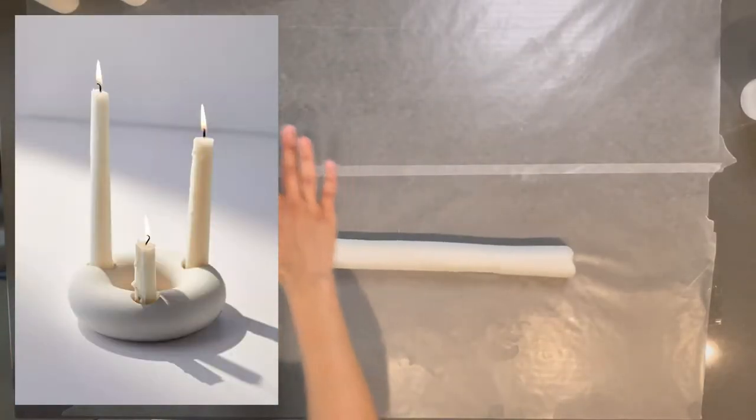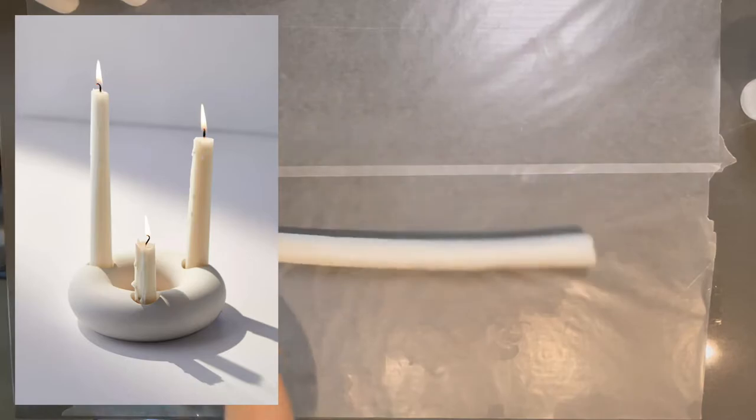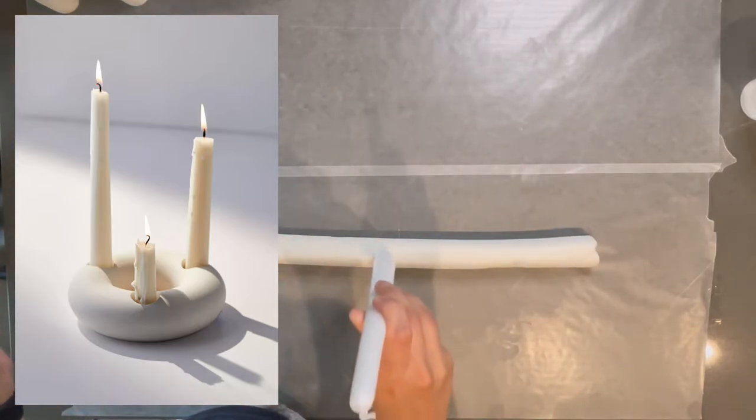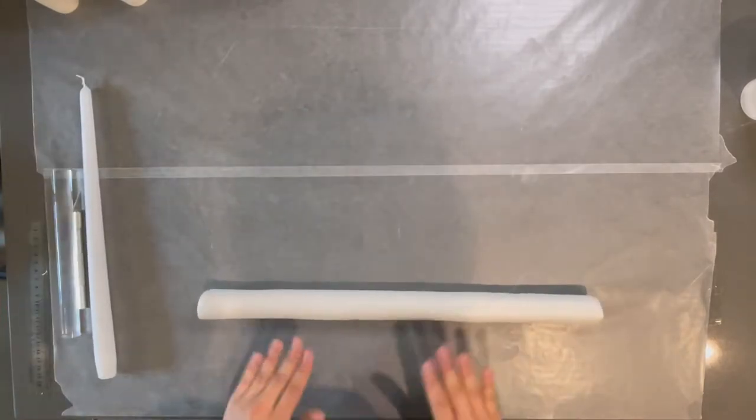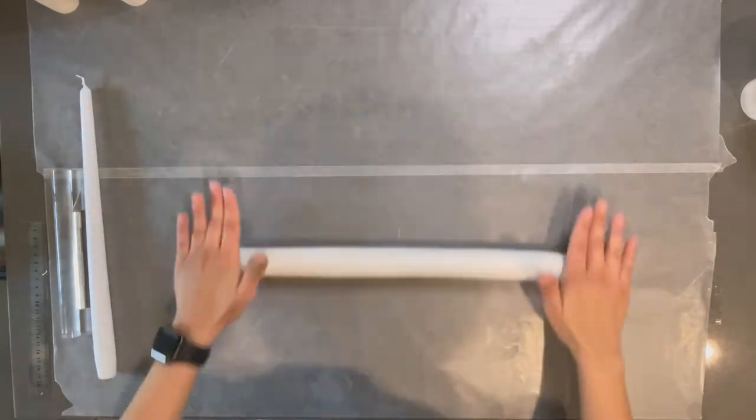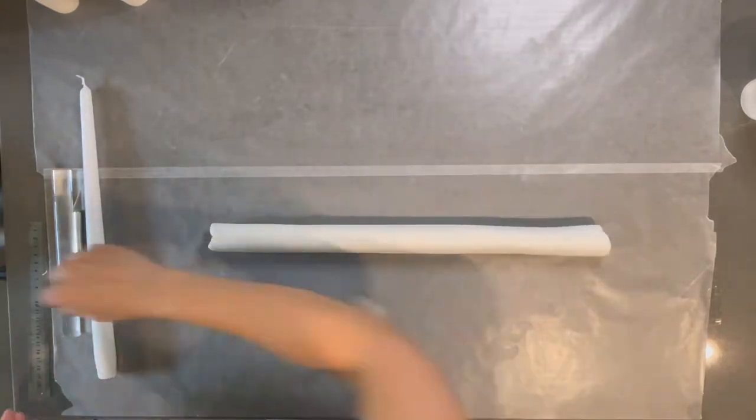For the second candle holder, again I started by rolling out a cylinder shape. For this one, I used a bit more clay to make sure my piece can hold three candles. The thickness is about the same as the last one, around one and a half inches. I then proceeded to cut the two ends so that they're flat.